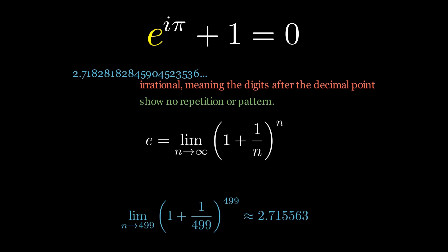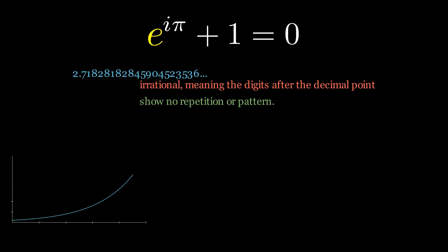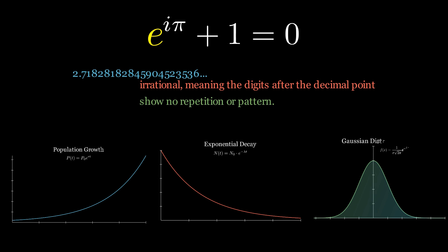e appears in many areas of math and science: population growth, exponential growth and decay. In probability and statistics, it appears in the study of the normal distribution curve.